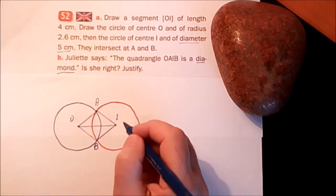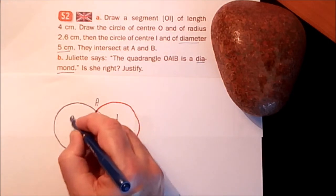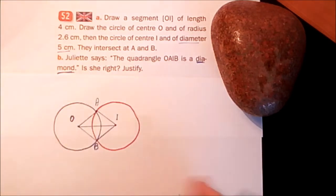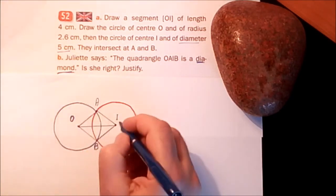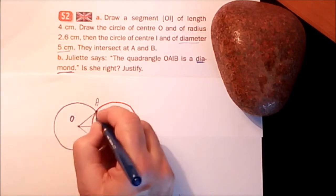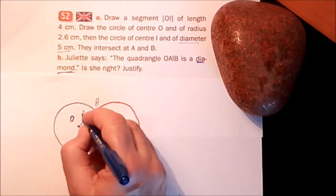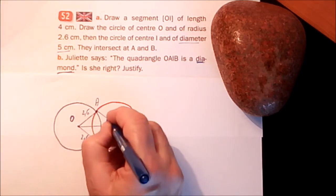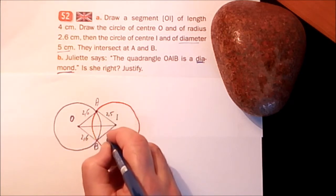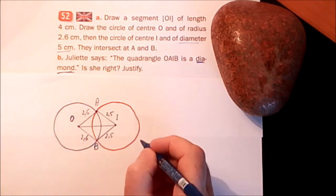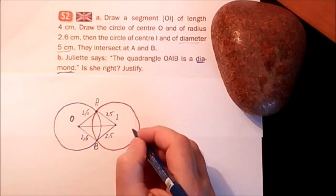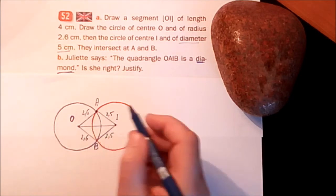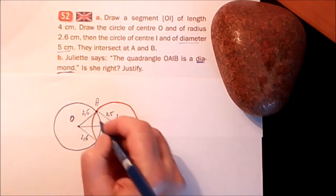Alors il semble que c'est un losange. A diamond, like diamonds in the sky. Alors combien ça fait? OA: 2.6, OB: 2.6, IA: 2.5, IB: 2.5. Alors vous voyez, est-ce que c'est exactement un losange?